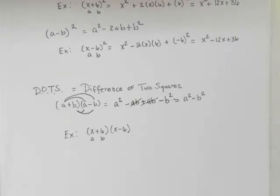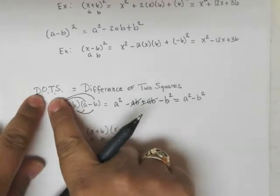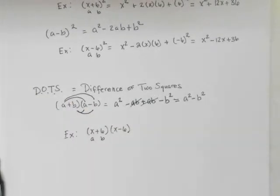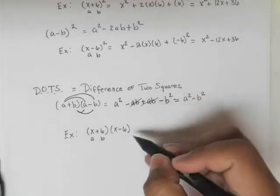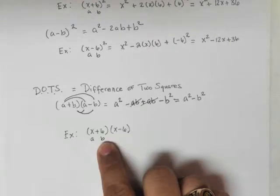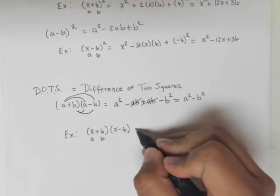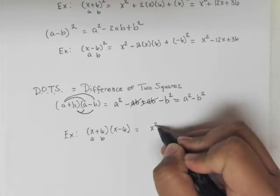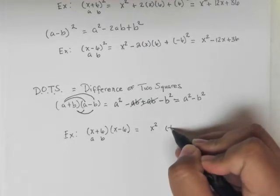So the difference of two squares, or DOTS as I'm going to call it in this class. Let's look at our example. Here's a, here's b. The trick here is just square the first number, square the second number.